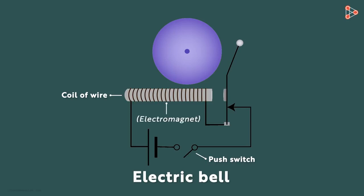So it will act as an electromagnet when the electric current flows through the circuit. This is a battery and this is a striker which strikes this gong. That's when we hear the sound.